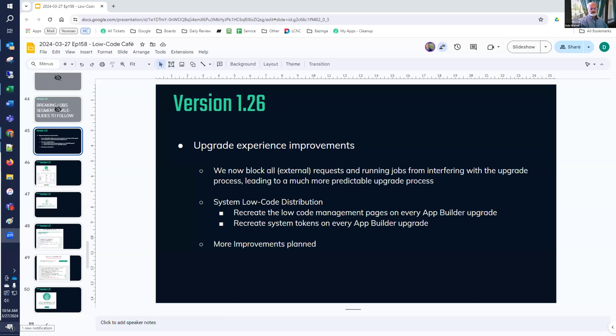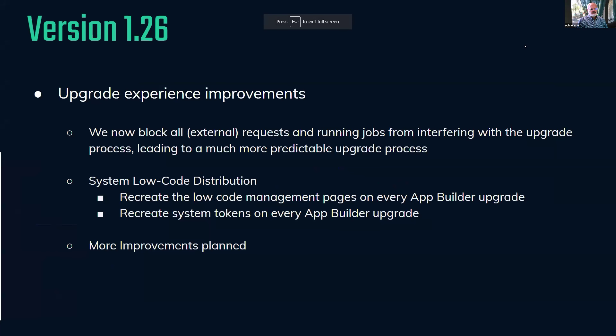Bogdan mentioned changes to the upgrade experience. In version 1.26, we found that requests coming into the site during an upgrade could interrupt it or make things run out of order, making upgrades not fully predictable or stable. We now block external requests to the site while upgrades are running, so you'll want to schedule upgrades when that's not a problem. This means the interference no longer prevents things from running in the right order, so upgrades will be more predictable.